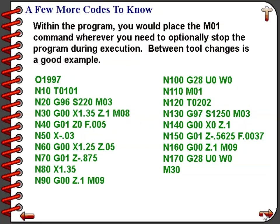In the example program, you can see the M01 command on line number 110, just before the tool change command calling up tool number 2. If the optional stop switch is turned on and this program is running, when it comes to line number 110 the machine will stop, allowing the setup person to go into the machine and check the workpiece.